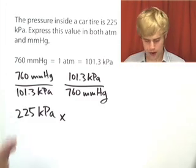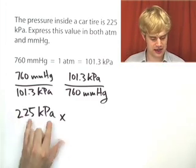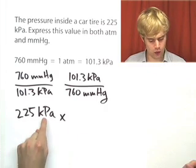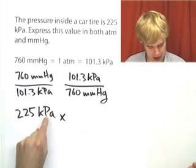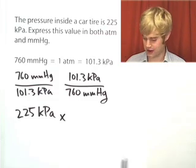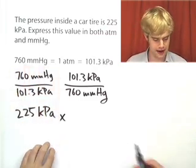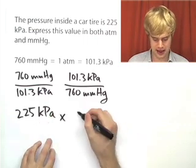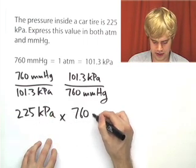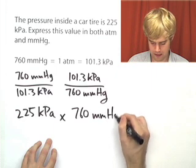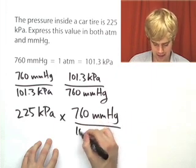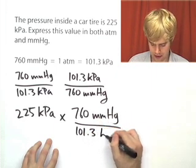Now, again, we want to choose a conversion factor that's going to get this kPa canceled out. We can only cancel out the kPa if it's on the top here and it's in the bottom on the conversion factor, which means that, once again, this is the conversion factor that we're on the bottom. 225 kPa times 760 millimeters of mercury divided by 101.3 kPa.